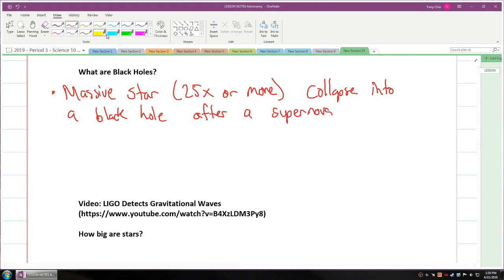The reason why it's called black hole is because its immense gravity is so strong not even light can escape its gravity. That's why it's called black hole.